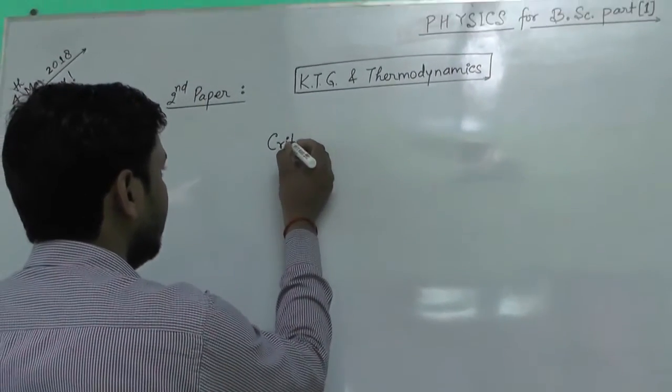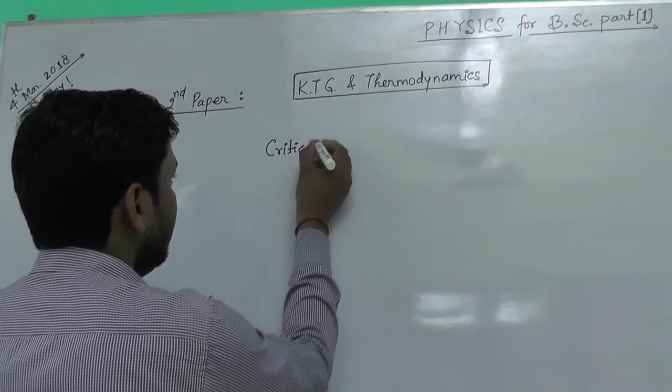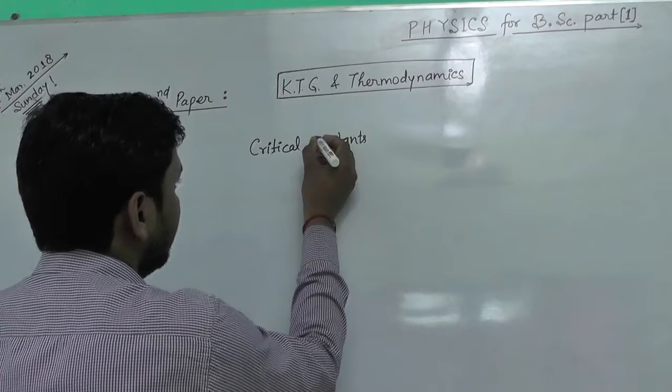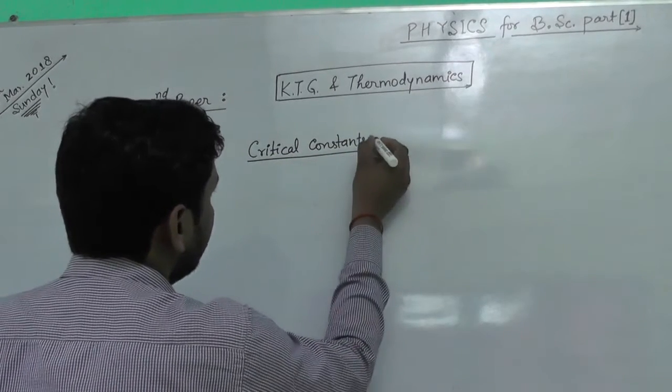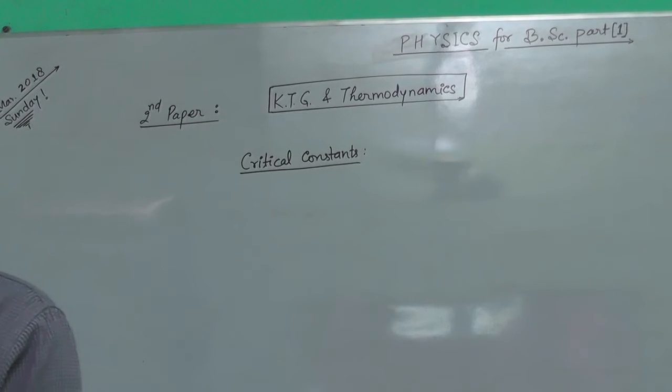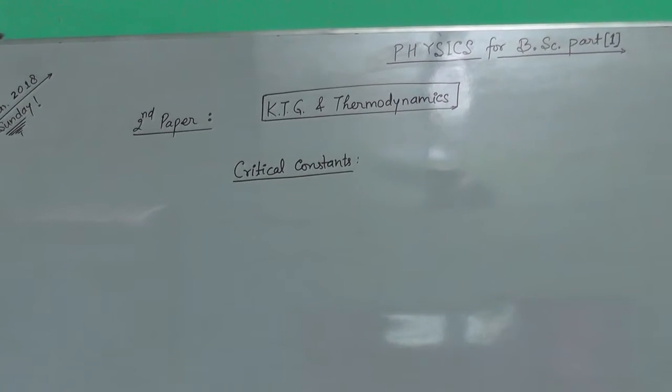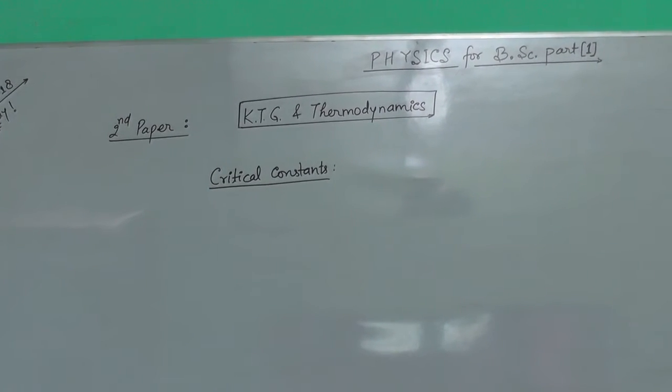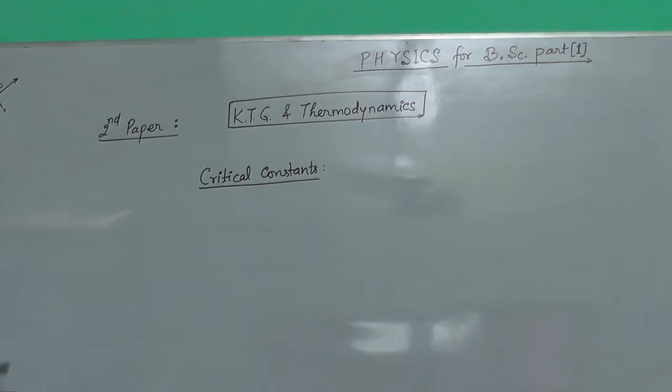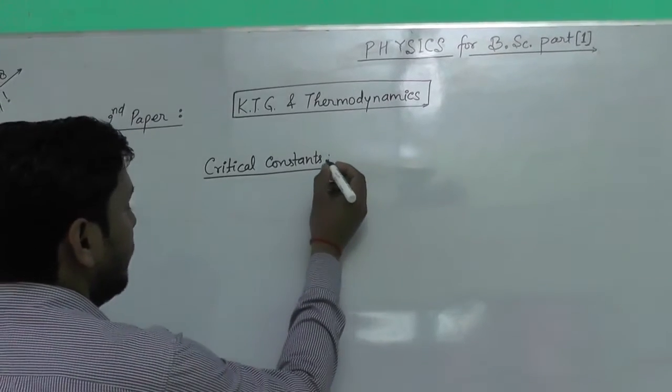Critical constants. Critical temperature, critical pressure, and critical volume are the critical constants - critical temperature, critical pressure, and critical volume.